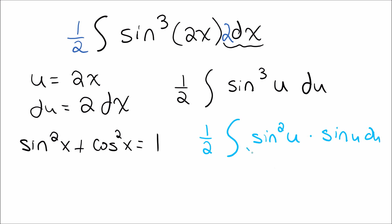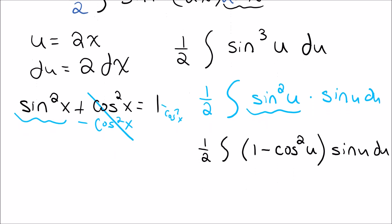So sine squared u, if I were to solve for sine, that would simply be by minusing cosine squared from both sides. So sine squared x is 1 minus cosine squared x. So for my problem here, sine squared u would be equal to 1 minus cosine squared u. So I'm going to go ahead and rewrite this problem as 1 half, the integral of sine squared u we just said became 1 minus cosine squared u times sine u du. Alright, so now I have this problem.